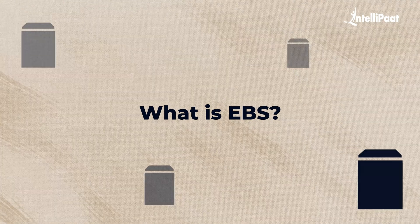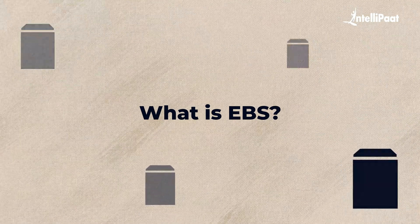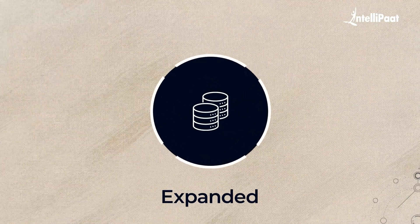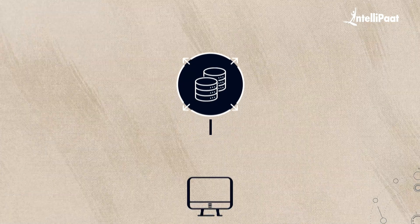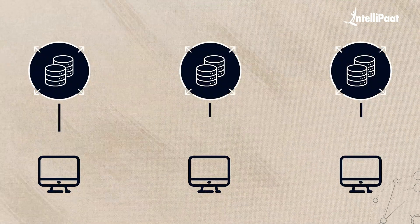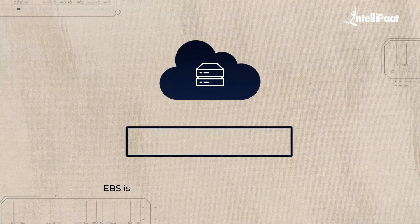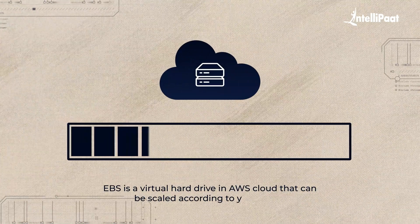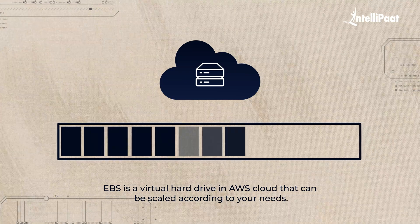Do you know what Amazon Elastic Block Storage, or EBS, is? What if you had a storage that could be expanded or shrunk according to your needs, and you could also plug in the storage to multiple devices? Well, this is exactly what EBS is. It is like a virtual hard drive in the cloud that provides storage that you can scale and tailor according to your requirements.